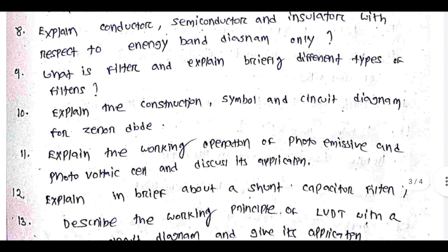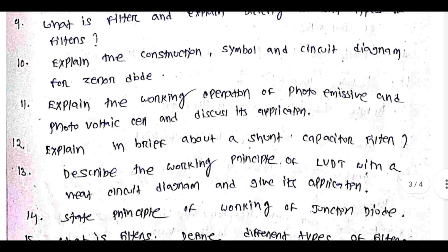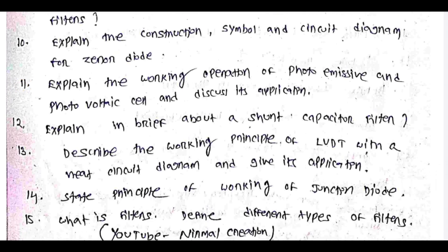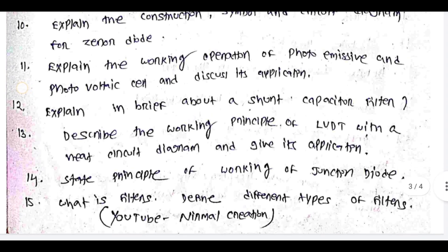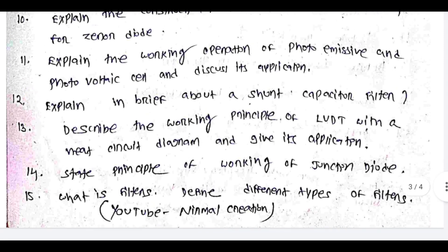More electronics long-answer questions: Explain the working of a full wave bridge rectifier with a neat diagram. Explain conductor, semiconductor, and insulator with respect to energy band diagram. What is a filter? Explain briefly different types of filters. Explain the construction, symbol, and circuit diagram of a general diode. Explain the working operation of photoemissive and photovoltaic cell and discuss its applications. Describe the working principle of LVDT with neat circuit diagram and its applications. State the principle of working of a junction diode.